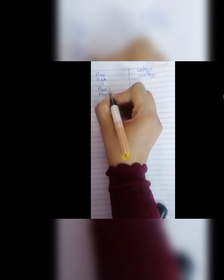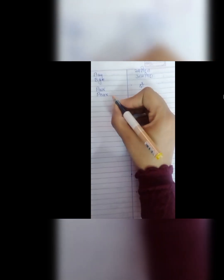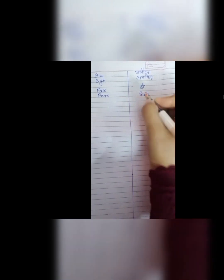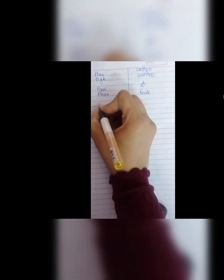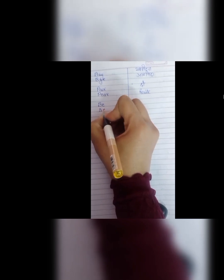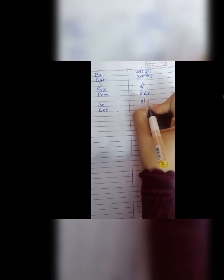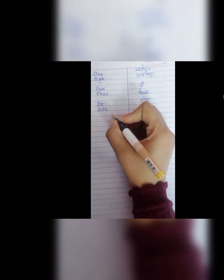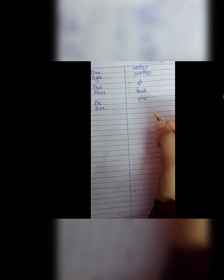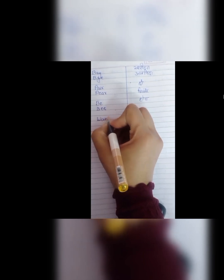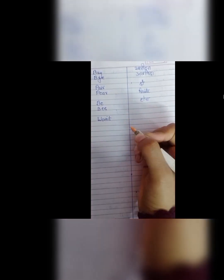Next is pair and pear. P, A, I, R, pair means do jho joda wala jho pair hoota hai. I have this pair of shoes. Matlab do shoes hain mere paas. And pear P, E, A, R. This is a fruit pear fruit. Next is be and bee. B, E means hona kisi chiz ka hona. And B, E, E means bee jho madhumakkhi hoti hai woh wali bee.